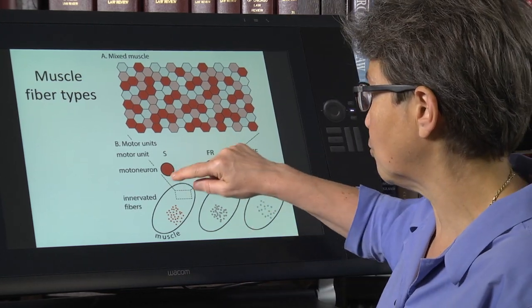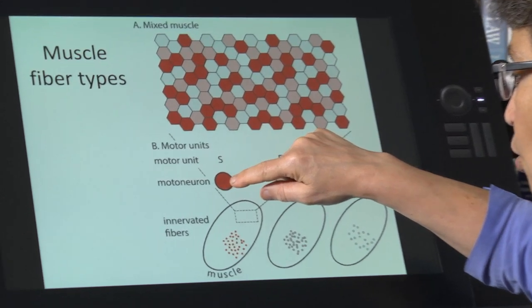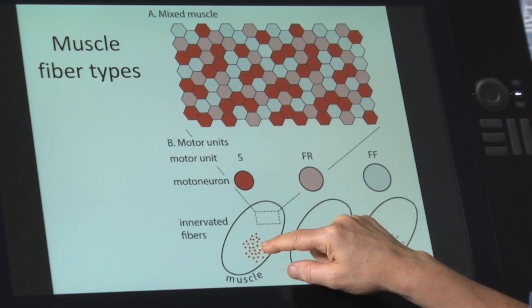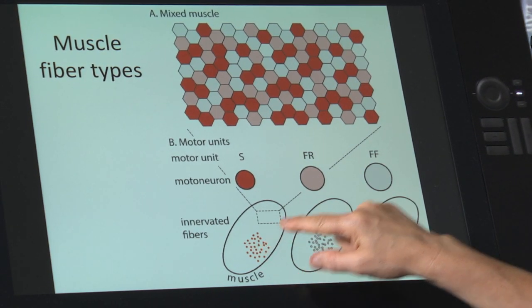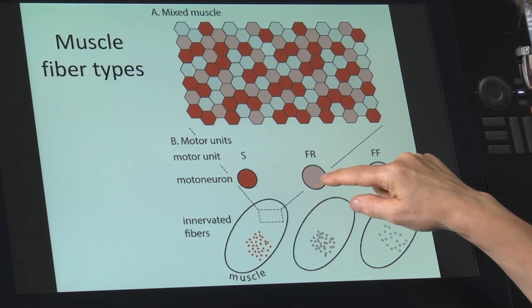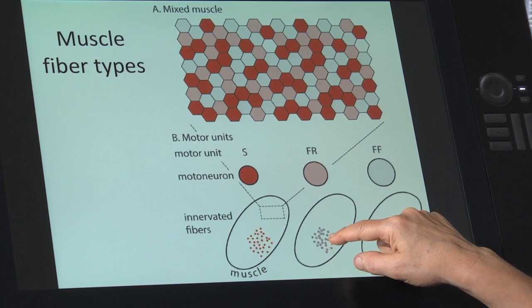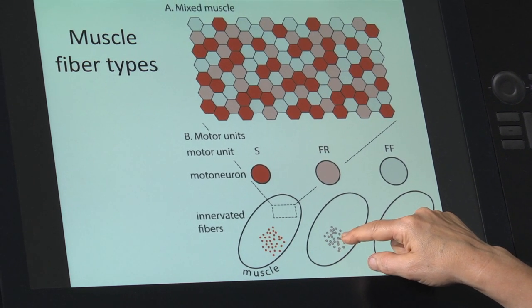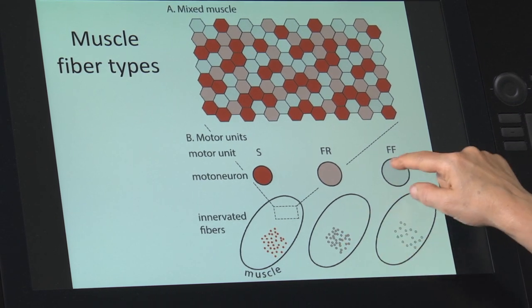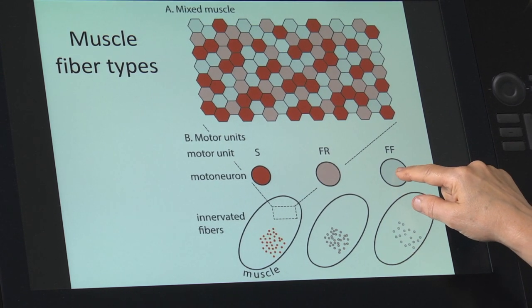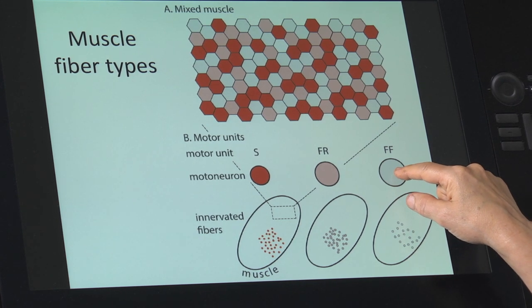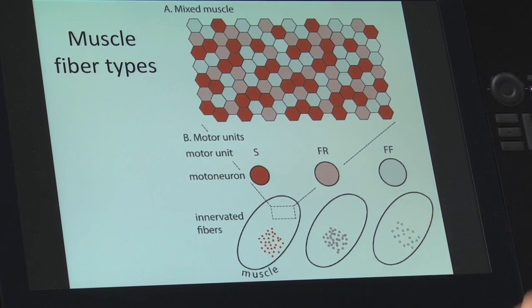So this motor neuron, this red motor neuron, is going to only innervate slow twitch muscle fibers. This pink motor neuron is only going to innervate the fast oxidative glycolytic fibers, and this white one, gray one, is going to only innervate the fast glycolytic twitch fibers.